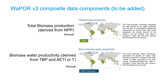Finally, WAPOR version 3 data will contain composite data products, which include annual maps of total biomass production derived from the net primary production data, as well as net and gross biomass water productivity, derived from the total biomass production over actual evapotranspiration and interception, or divided by transpiration — the latter being the net biomass water productivity layer.